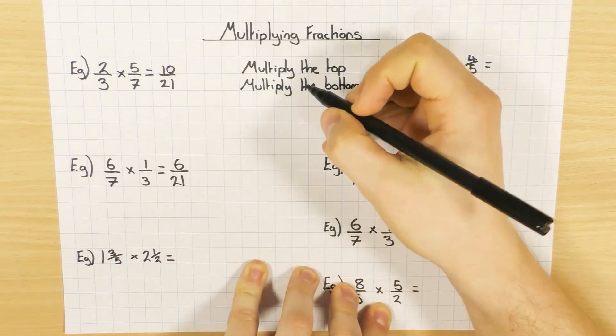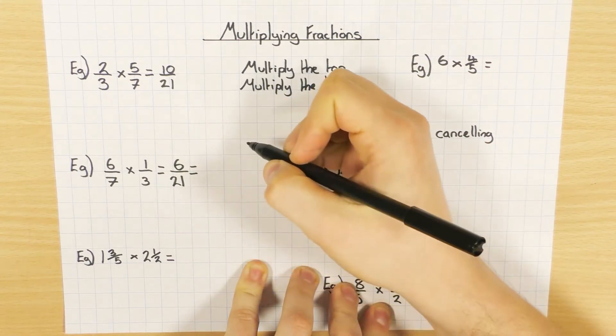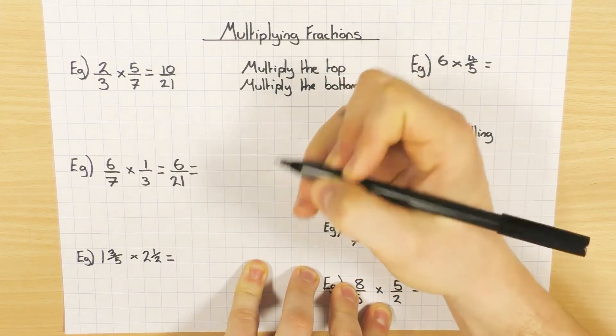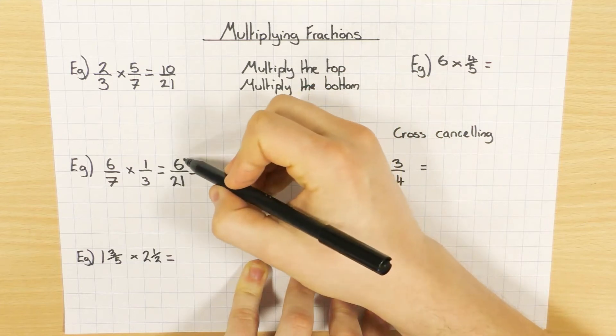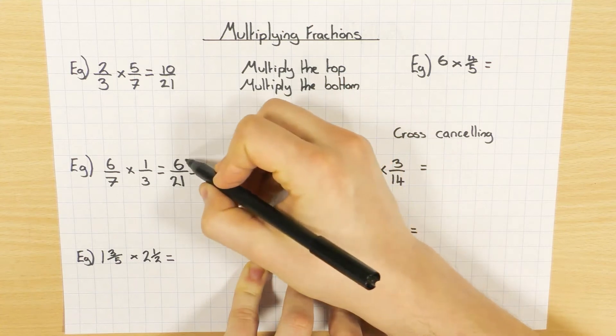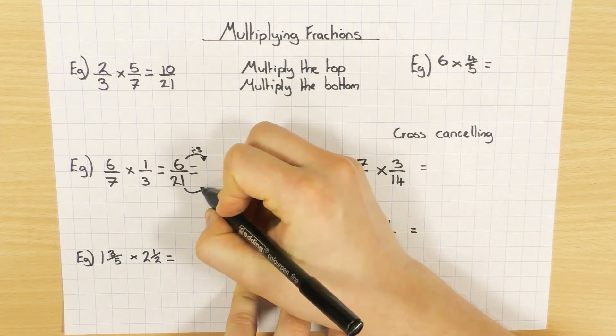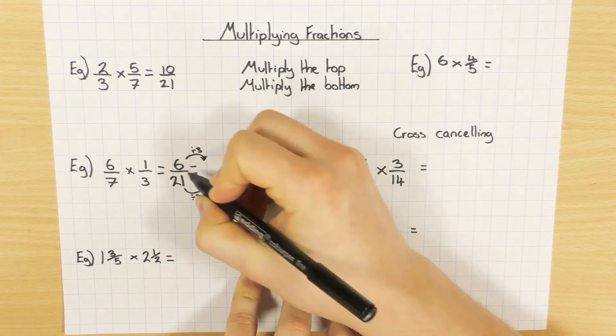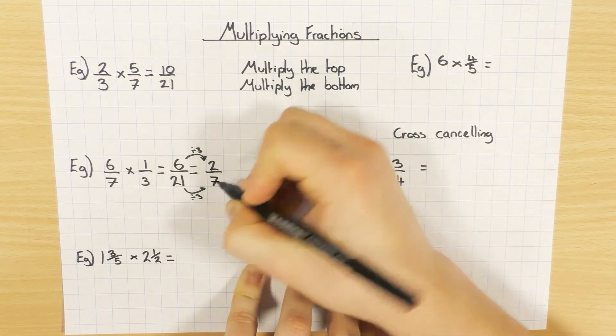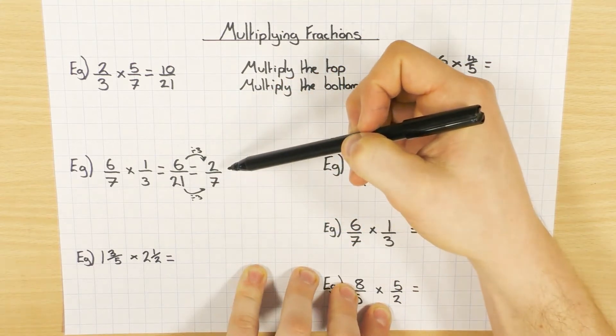Now hopefully in this case you've noticed that you can simplify, and you should always simplify your answers. Most of the time in the exam questions I will tell you to simplify, but just out of habit, get in the habit of simplifying. So what's the highest number that goes into 6 and 21? Well that's 3. So I'm going to divide both of these by 3. 6 divided by 3 is 2, and then 21 divided by 3 is 7. So multiply the top, multiply the bottom, get an answer, and then simplify it.